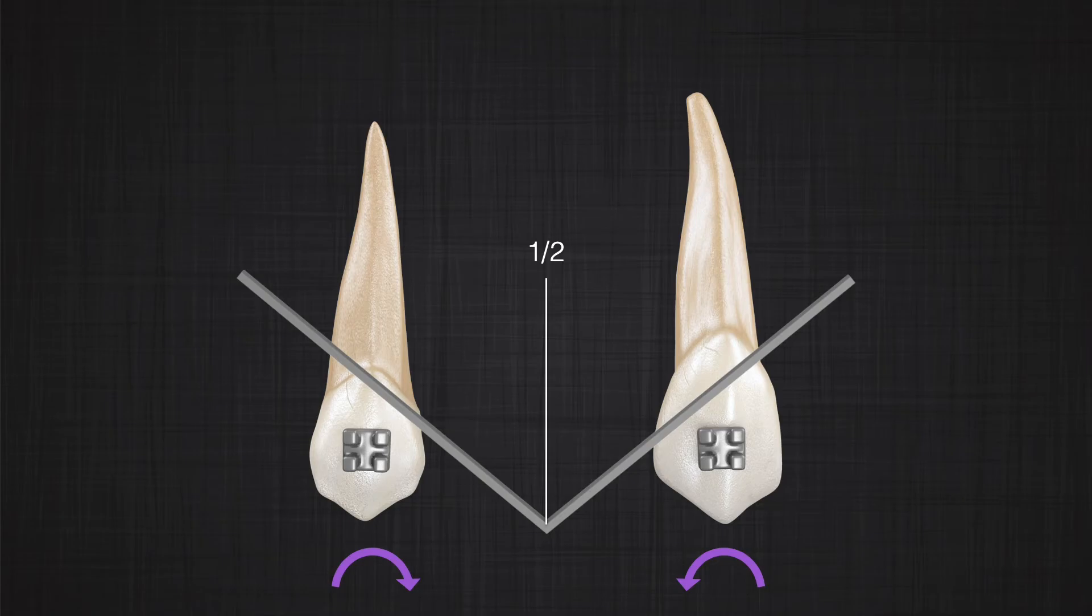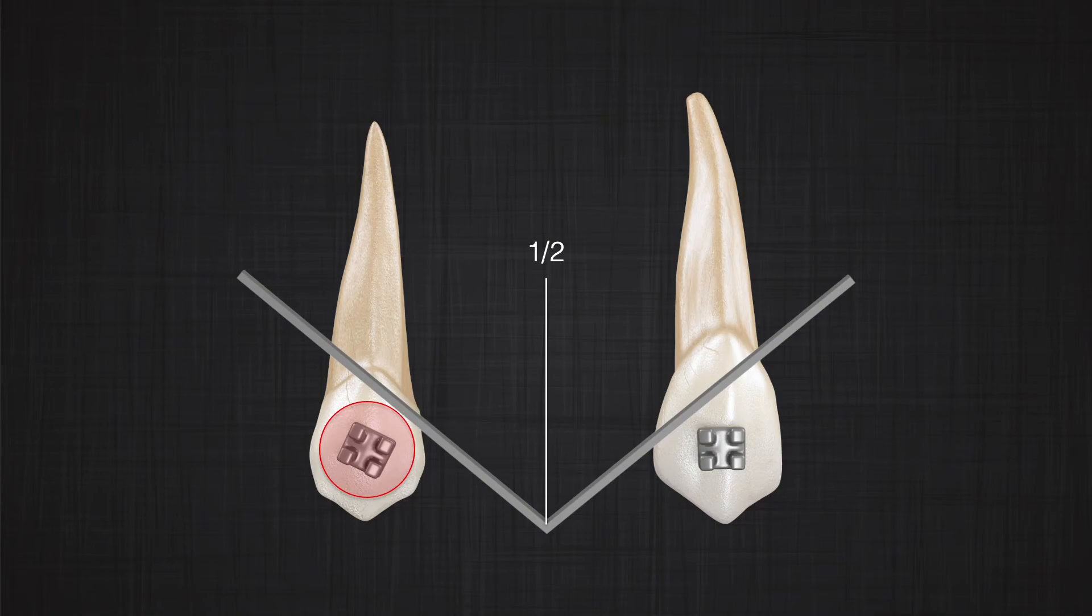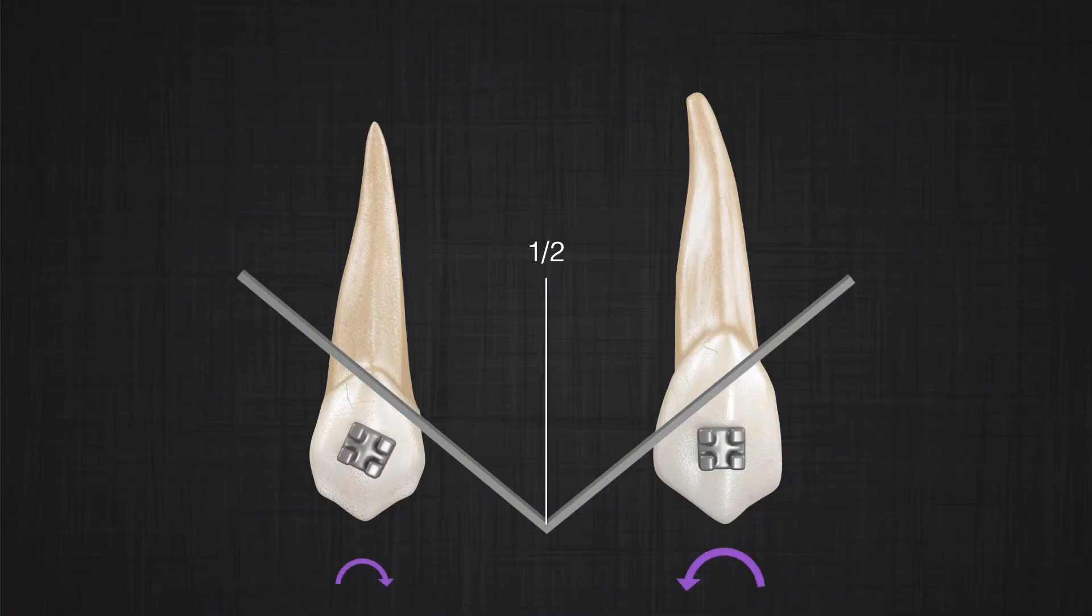But what happens if we angulate one of the brackets? Why we want to do that is a different question, but assume we did. We angulate one of the brackets and still put a central v-bend. Would the result be the same? Of course not. Why? Well, the angle of activation of the wire would be different in these two brackets. Now if you're engaging this wire inside both brackets, what you're going to see is one tooth will receive a higher moment—the one that has a higher angle of activation—and one tooth will receive a smaller moment—the one with a smaller angle of activation. And therefore, vertical forces will start to appear in your system.